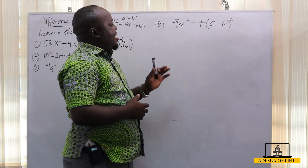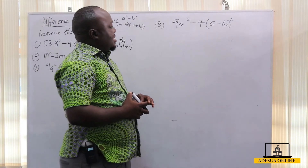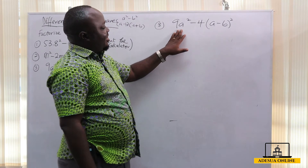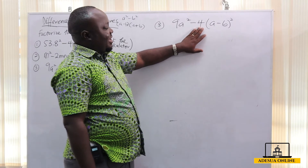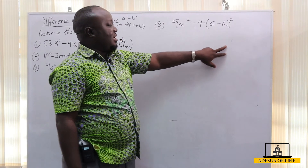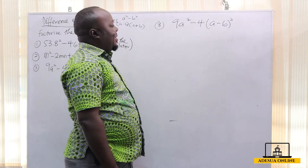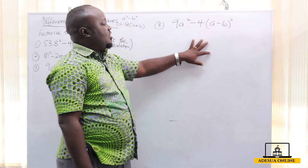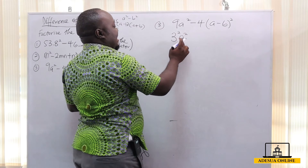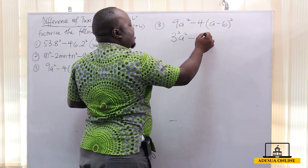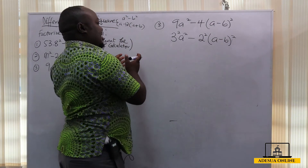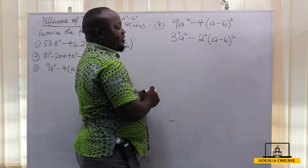In question 3, we are asked to factorize 9a² - 4(a - b)². We can see this as a difference of two squares. 9a² is a perfect square and 4(a - b)² is also a perfect square, expressible as 2² times (a - b)². However, until we get a square of one thing minus a square of another thing, it is not yet the difference of two squares.